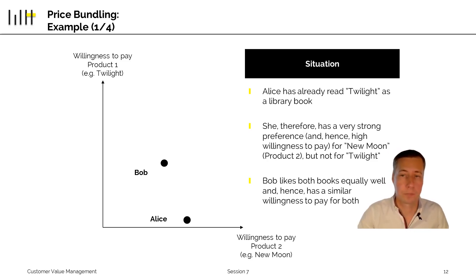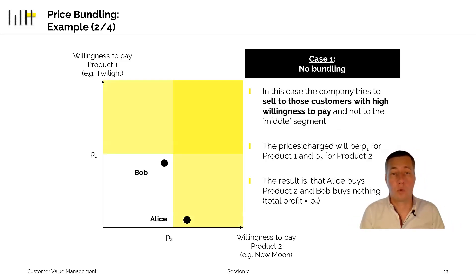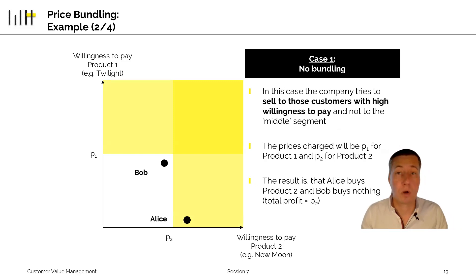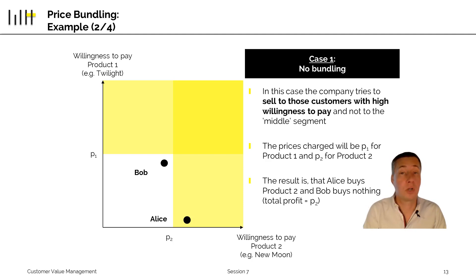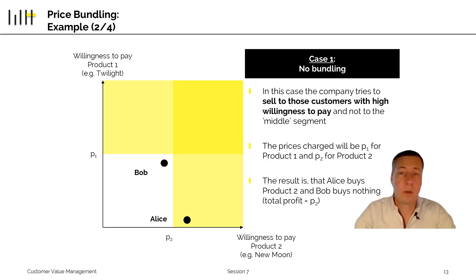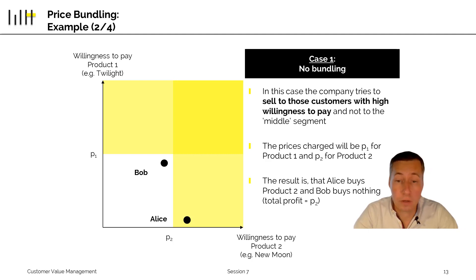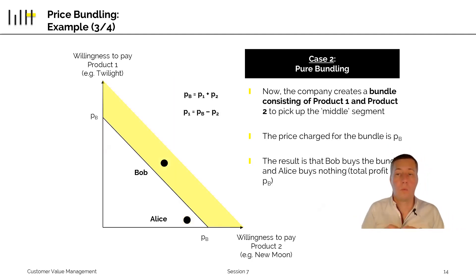Case one is no bundling. The company sells each product individually and charges a price as high as possible — p1 for product one and p2 for product two. Alice's willingness to pay for product one is far too low, so she doesn't buy it, but her willingness to pay for book two is really high, so she buys book two. Bob likes the books but not enough — his willingness to pay is too low for both, so he buys nothing. In this setting, the total profit is just p2.